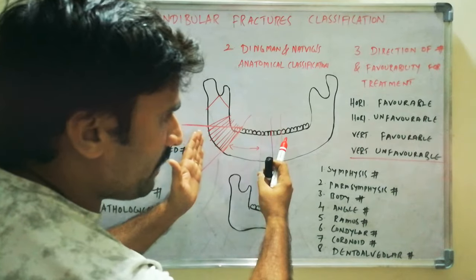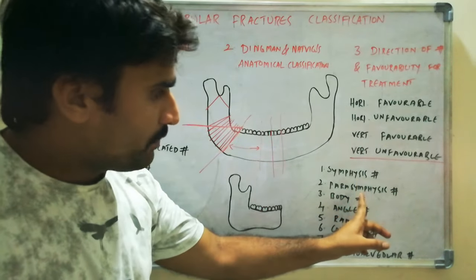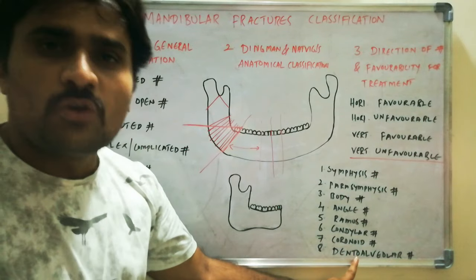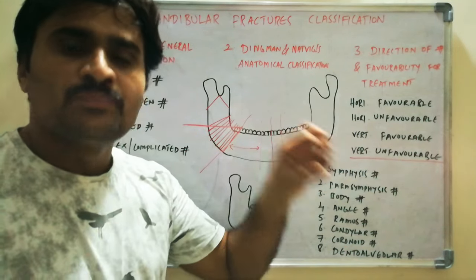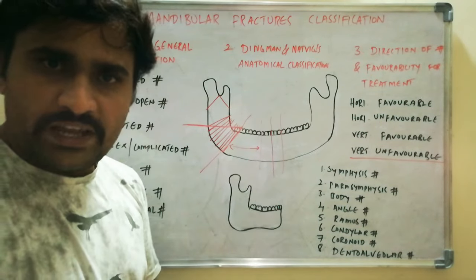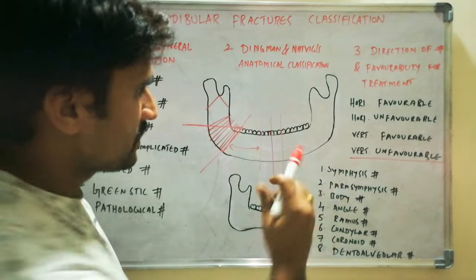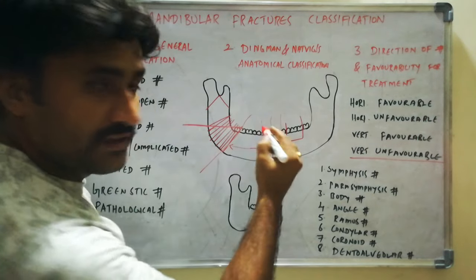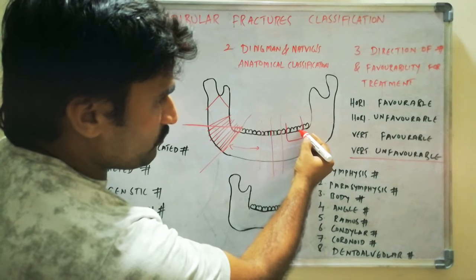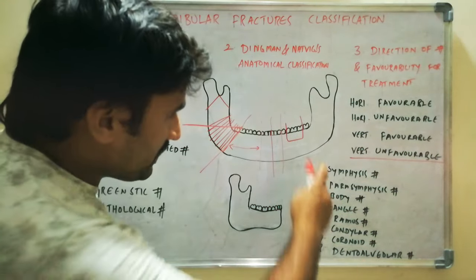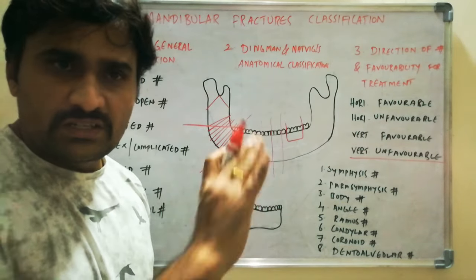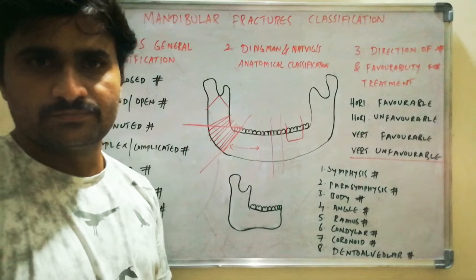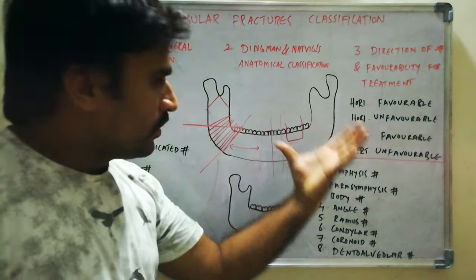One half of the mandible is divided into: symphysis, parasymphysis, body, angle, ramus, condylar, coronoid, and dentoalveolar fractures. Dentoalveolar fracture means fractures involving the alveolar process of the mandible without extension to the basal bone — the fracture runs through the alveolar bone in the region of the second premolar, first molar, and second molar, without involving the lower border of the mandible. It involves only the alveolar process, so it is called a dentoalveolar fracture.